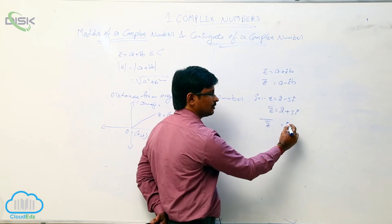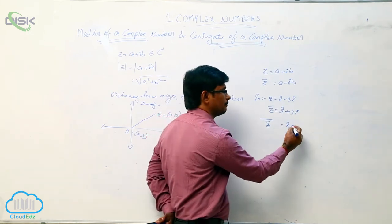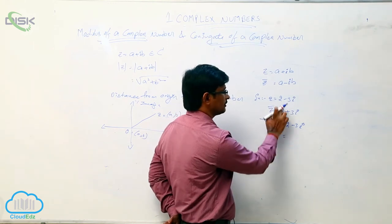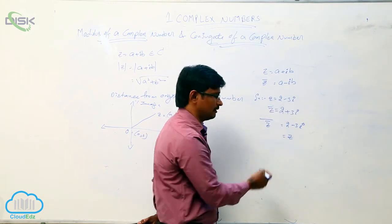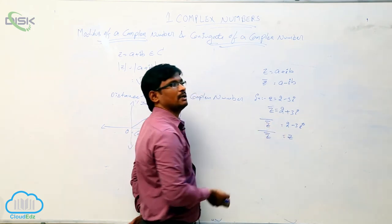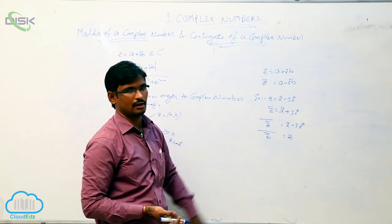That is 2, what is the plus 3 opposite? Minus 3i, which is nothing but z. Which means conjugate of conjugate of the complex number gives the complex number. We can say that this is one of the properties.